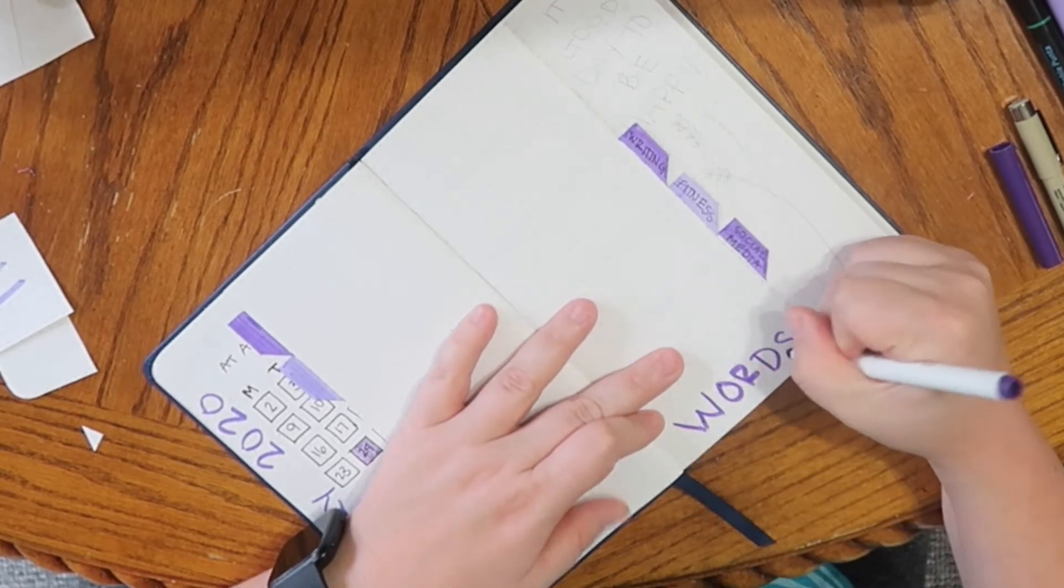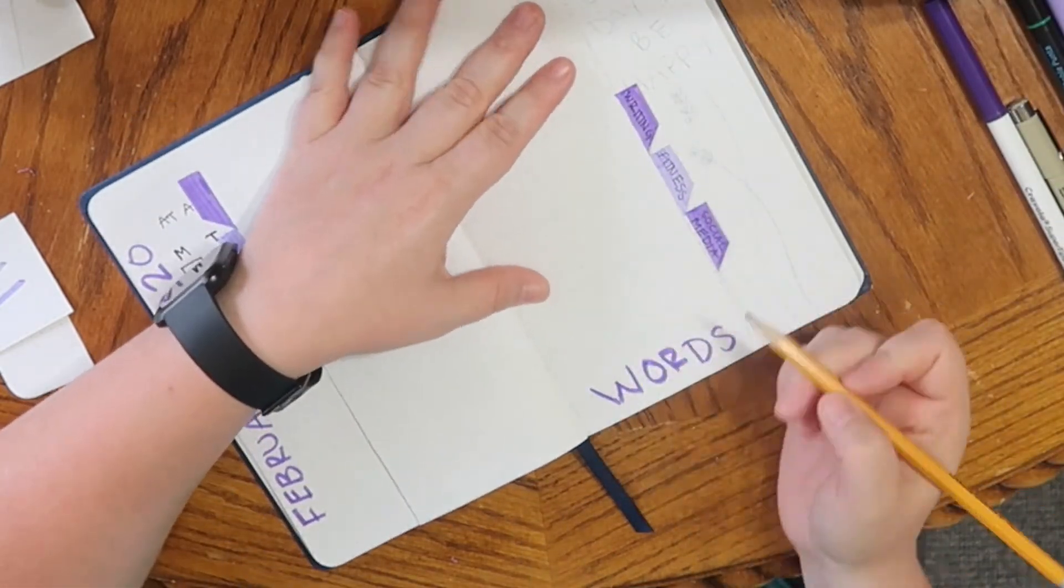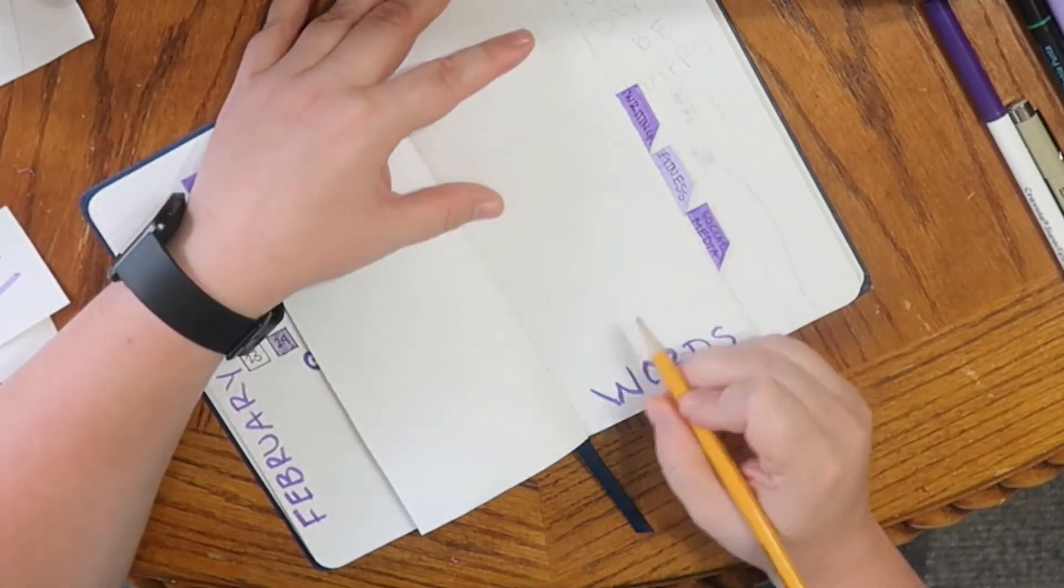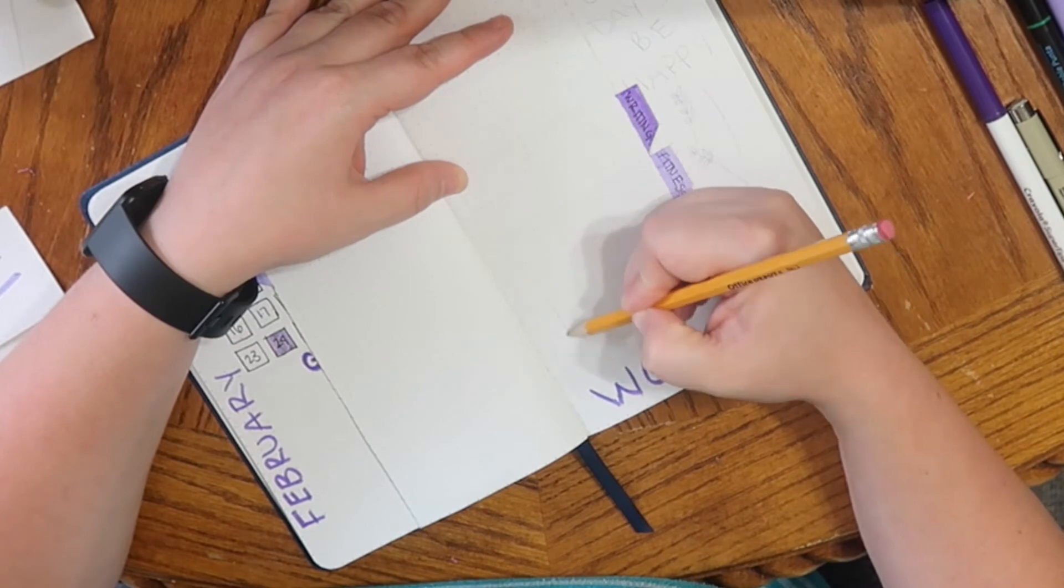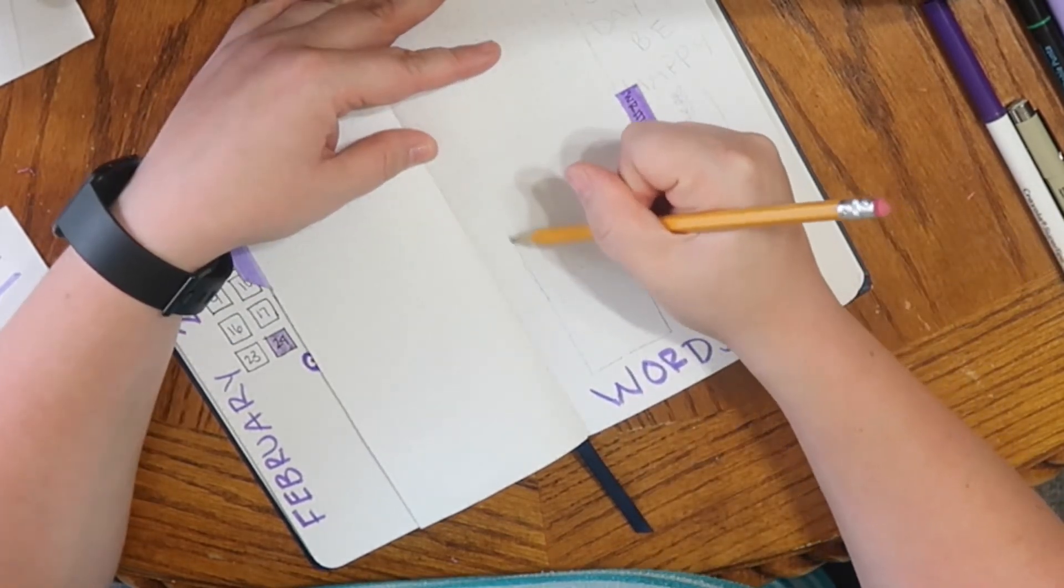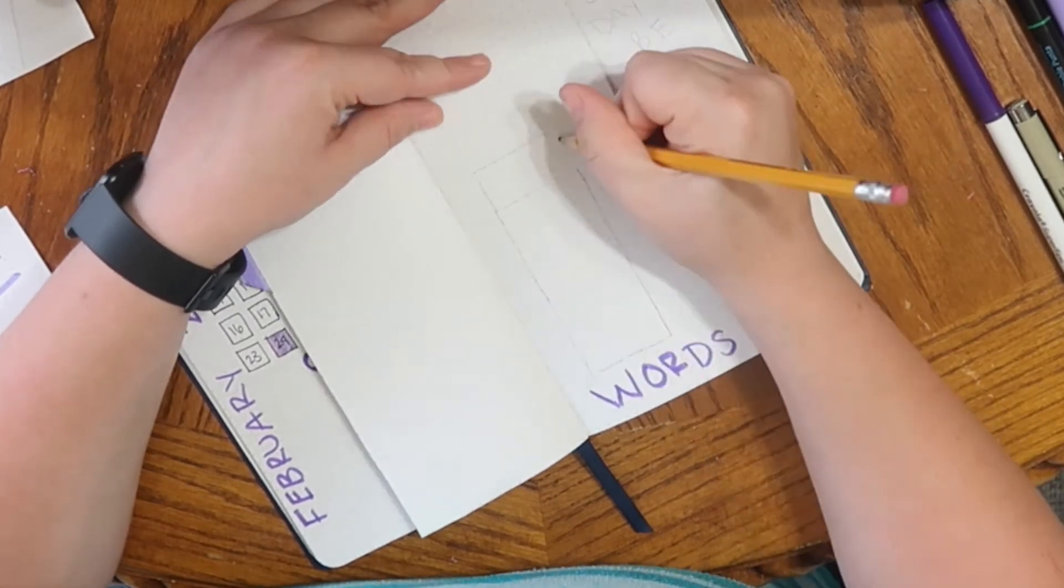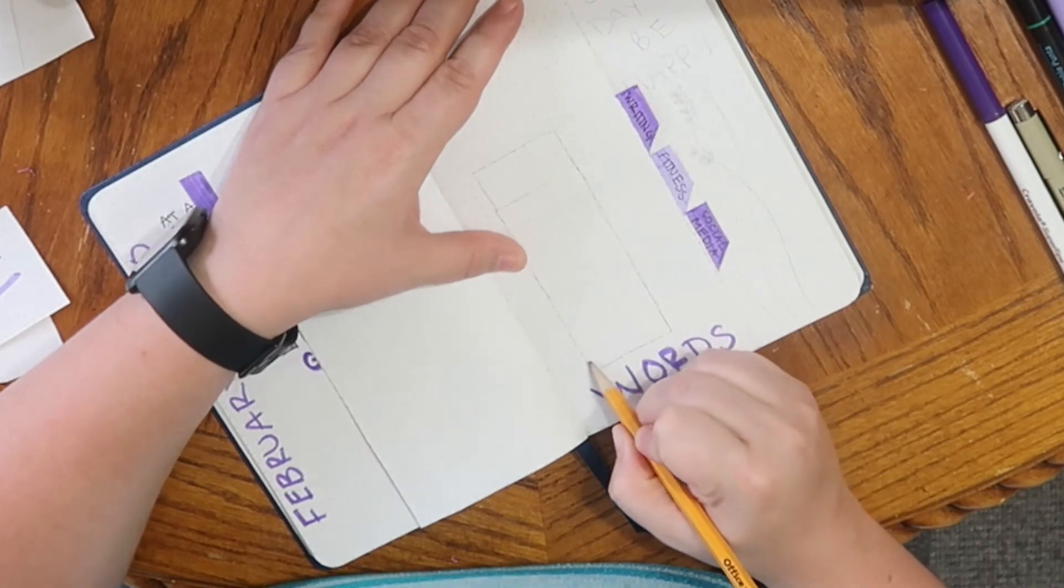All right. And this page, I actually left blank originally because I couldn't decide how I wanted to set it up. But I went ahead and Pinterest, Google looked up some ideas and I decided to just do a word count tracker on the right side. And I actually still don't know what to do on the left side.